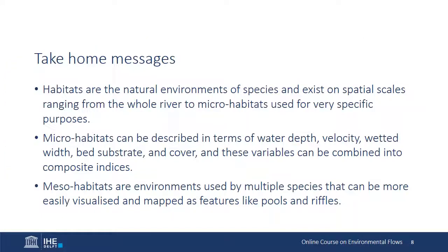Take-home messages from this lecture: First, habitats are the natural environments of species and exist on spatial scales ranging from the whole river to microhabitats used for very specific purposes. Second, microhabitats can be described in terms of water depth, velocity, wetted width, bed substrate, and cover, and these variables can be combined into composite indices. Finally, mesohabitats are environments used by multiple species that can be more easily visualized and mapped as features like pools and riffles. Habitats are the basis for an important set of e-flows approaches, which we'll look at in much more detail later in the course.